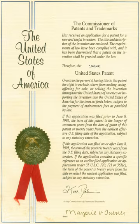In most European countries, ownership of an invention may pass from the inventor to their employer by rule of law if the invention was made in the course of the inventor's normal or specifically assigned employment duties, where an invention might reasonably be expected to result from carrying out those duties, or if the inventor had a special obligation to further the interests of the employer's company. The inventors, their successors or their assignees become the proprietors of the patent when and if it is granted.